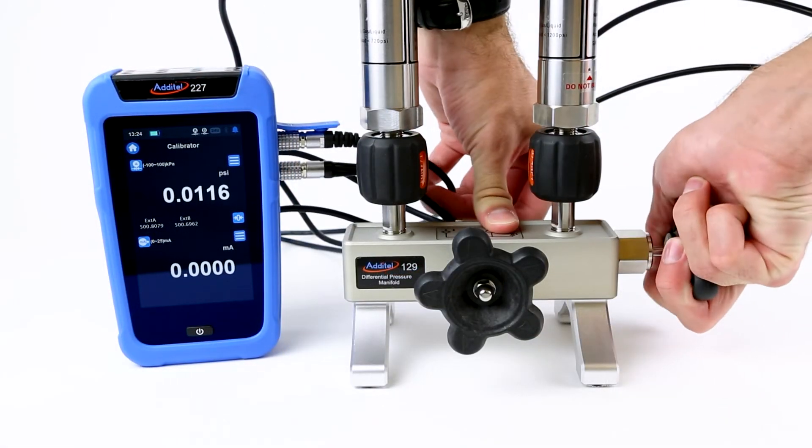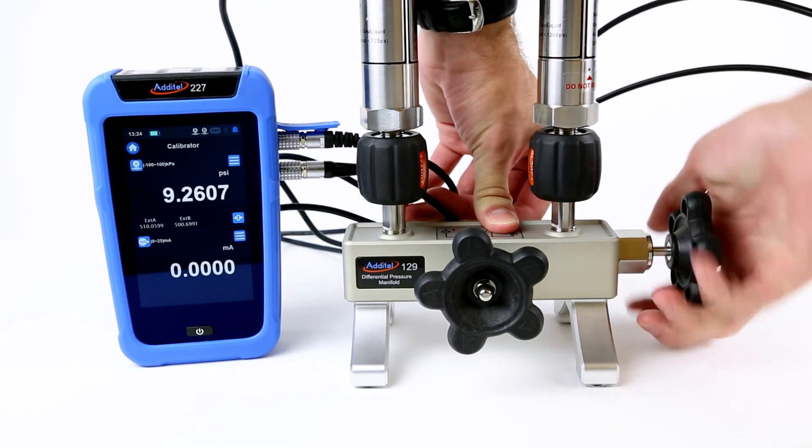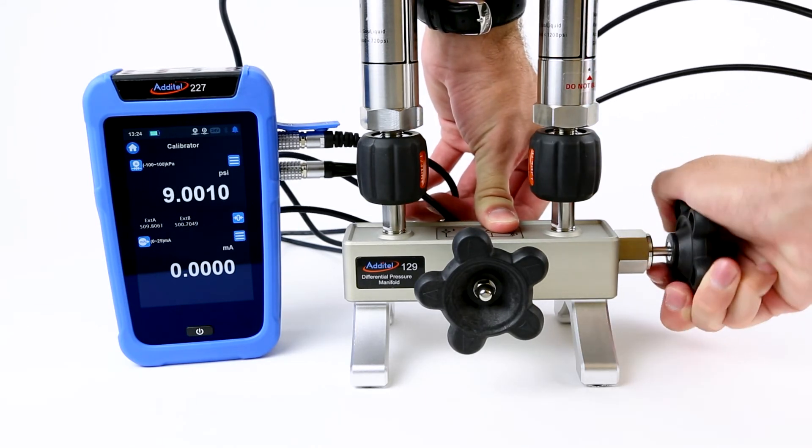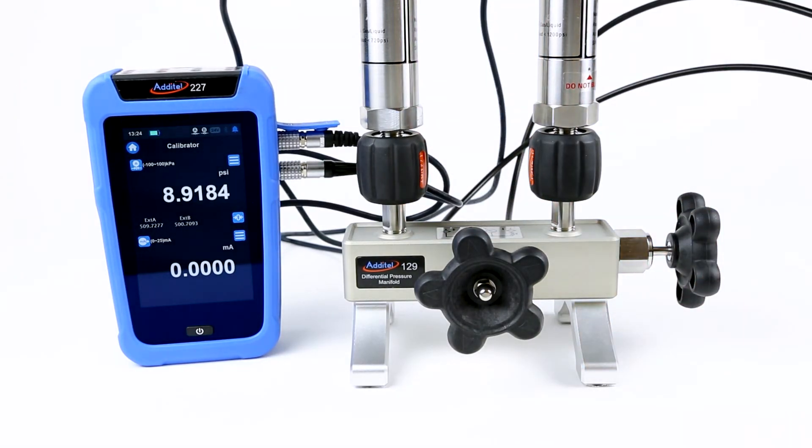Next, we open the high line pressure. As you can see, module A is seeing the high pressure, and the ADT 227 is displaying the differential between the two modules.